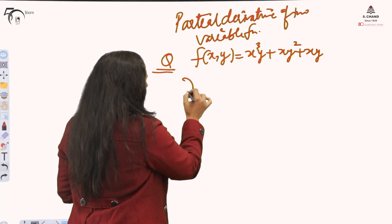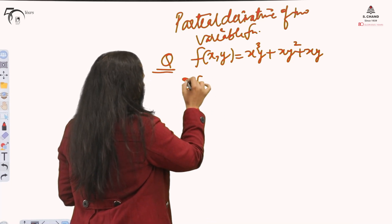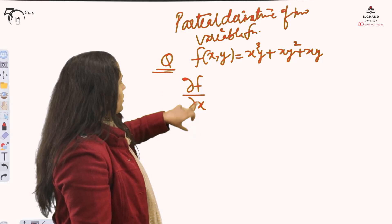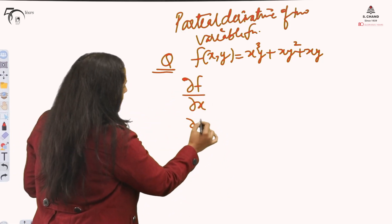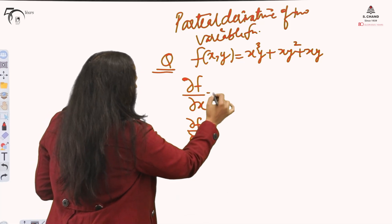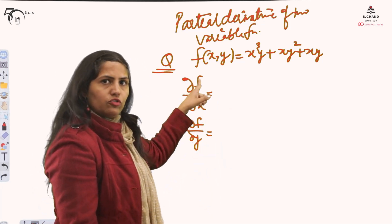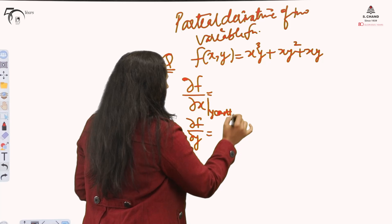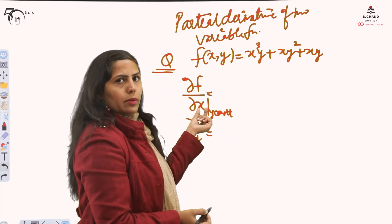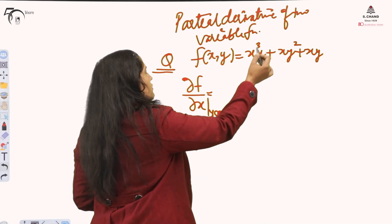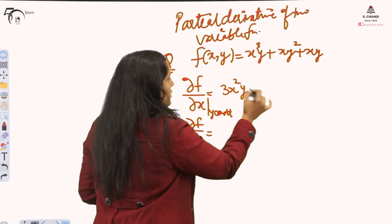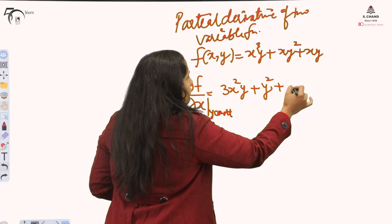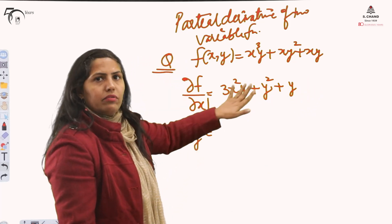The partial derivative notation uses the curly 'del' symbol. So del f / del x — since it is a two-variable function, we have two partial derivatives of first order. When differentiating partially with respect to x, we keep y constant and treat x as the variable. So: the derivative of x³ is 3x², multiplied by constant y; y² is constant so the derivative of x is 1; and y is constant with derivative of x equal to 1. This is how we compute del f / del x.